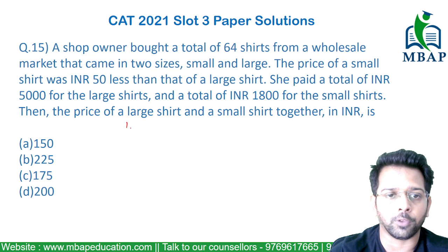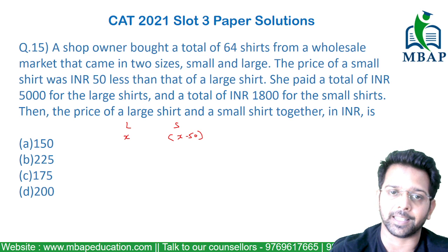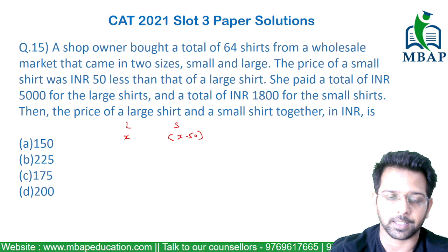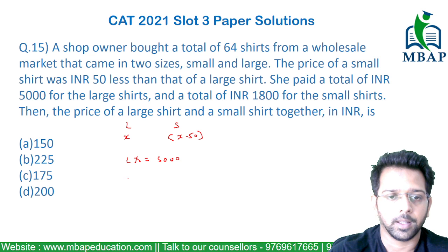Let's assume on one side I've got large shirts and on the second side I've got small shirts. If I assume the cost of large is X, the cost of smaller will be X minus 50, which is lesser than X. The question says L into X is a total of 5000, and S into X minus 50 is basically 1800.